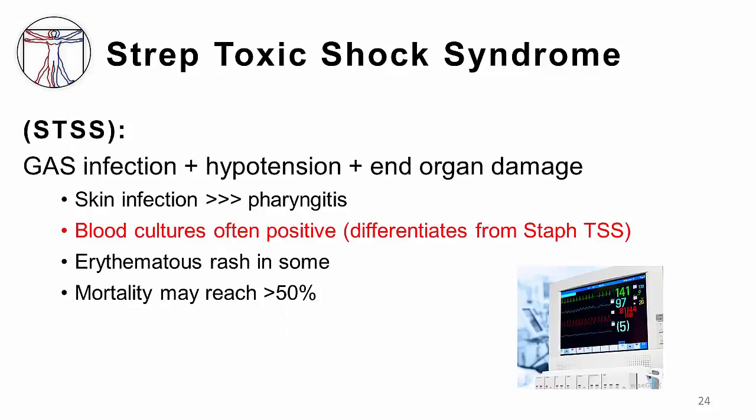An additional word about streptococcal toxic shock syndrome: this syndrome is distinct from staph toxic shock syndrome, which is the toxic shock associated with tampon use, amongst other things. Streptococcal shock syndrome may occur with strep infection at any site, but most often occurs in association with infection of a cutaneous lesion, particularly a necrotizing soft tissue infection. Strep toxic shock syndrome is characterized by low blood pressure and evidence of end organ dysfunction. Many patients also exhibit a diffuse erythematous rash. Blood cultures are very often positive for group A strep in this syndrome, which is another feature that distinguishes it from staph toxic shock, which rarely has positive blood cultures.